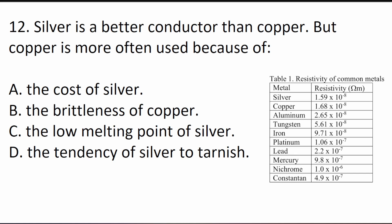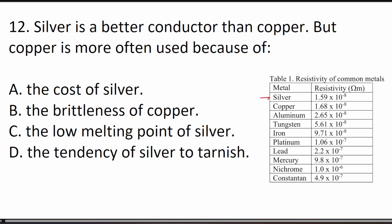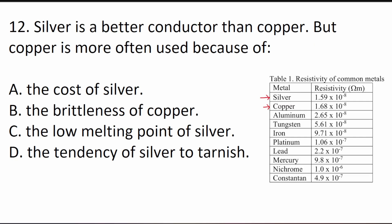Question 12 asks: silver is a better conductor than copper, but copper is more often used because of what? From the resistivity chart, silver has less resistance than copper, making it a better conductor. However, silver is used less often because it costs significantly more — about 10 to 20 times the cost of copper.